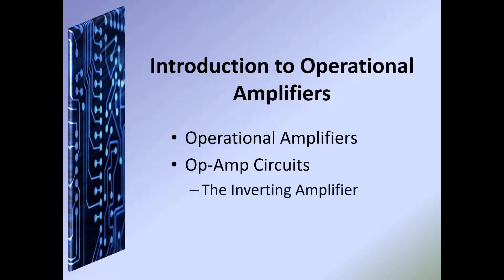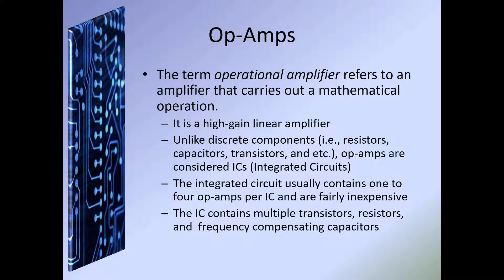We'll be covering operational amplifiers and op amp circuits — specifically the inverting amplifier and the non-inverting amplifier. The term 'operational amplifier' refers to an amplifier that carries out a mathematical operation, which you will see in your upcoming labs and examples on how to wire up your op amps. They are a high-gain linear amplifier. Unlike discrete components such as resistors, capacitors, and transistors, op amps are considered ICs because they are all incorporated inside this small little IC — what we call a 'black box.'